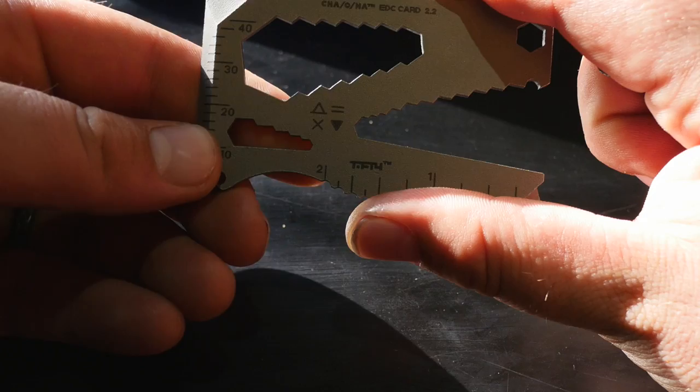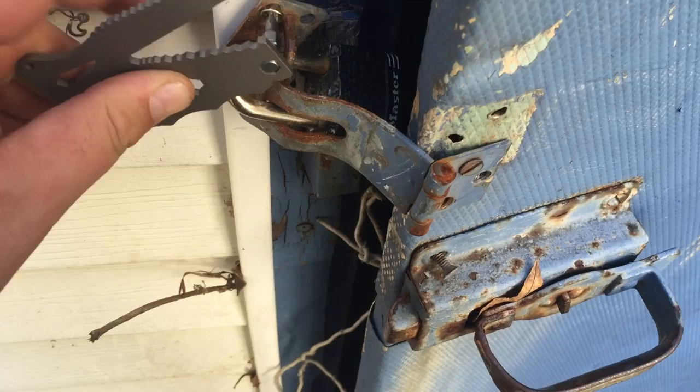There's also a bit slot up there—a bit just slides into there so you wouldn't need an actual bit holder. We have the ruler down here.